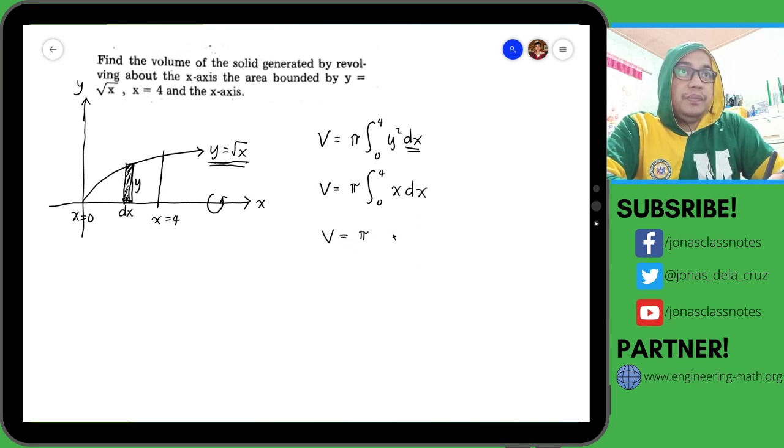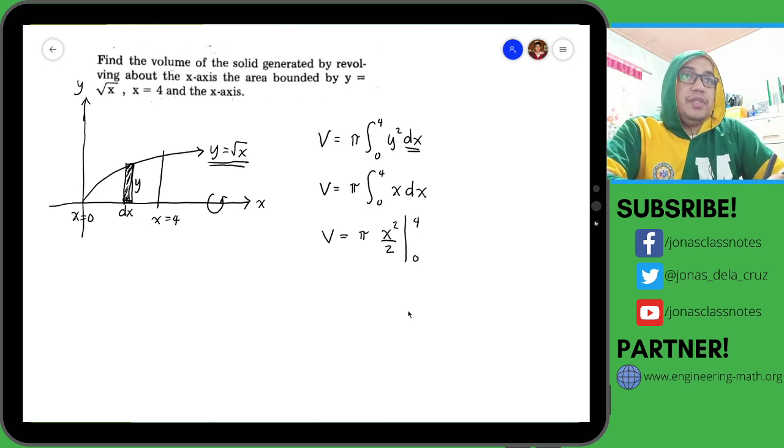Then evaluate. So π times x squared over 2, then evaluate from 0 to 4.